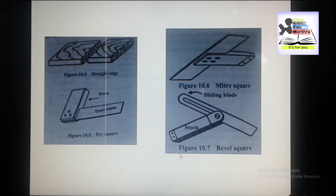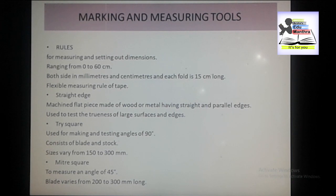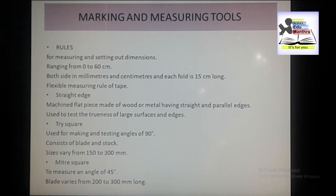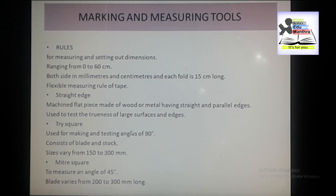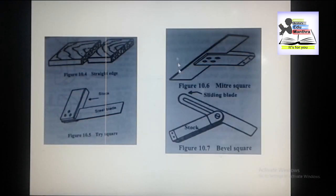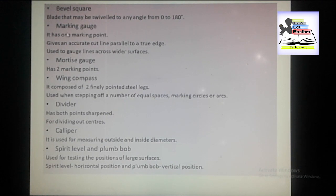Let us start with marking and measuring tools. Marking and measuring tools have been developed so that true and accurate work may be assured. The important marking and measuring tools include: rules, straight edge, try square, miter square, bevel square, some gauges, marking gauges, mortise gauges, wing compass, divider, caliper, and spirit level and plumb bob.